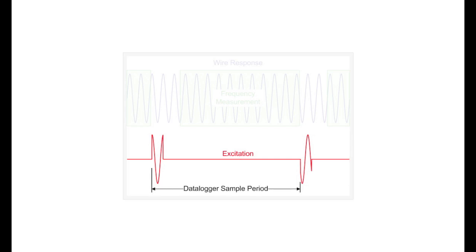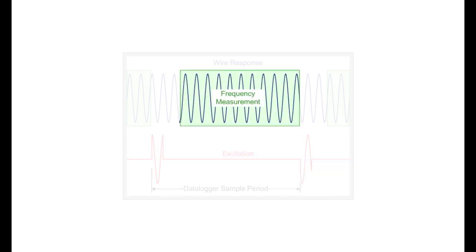It is important to note that the excitation is inserted according to the time base of the datalogger and is independent of the frequency or phase of the wire. This allows us to synchronize all of the measurement channels to one another and to the scan of the datalogger. It also ensures that the excitation pulse is not included in the digitized sample used for determining the resonant frequency.